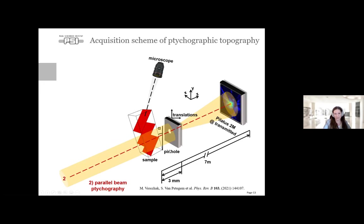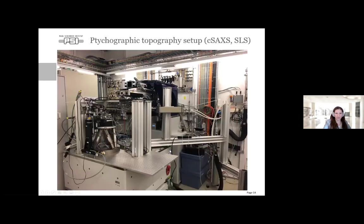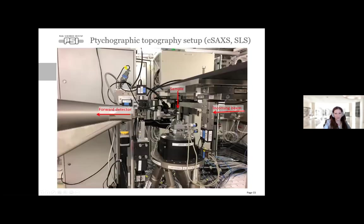This is an example of one of the setups I built at CSACS. We have an incoming beam and the sample on a rotation stage with several translation stages. There is a Bragg detector, a forward detector, focusing optics that come in and out, and a pinhole for scanning after the sample.